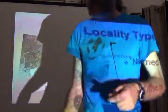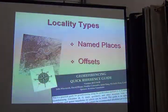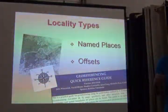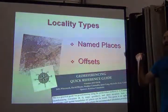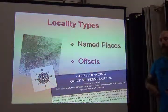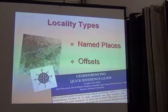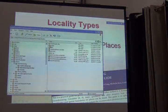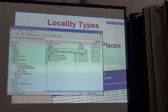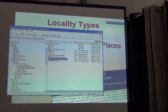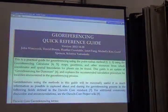One of the big reasons I want to show this is where you can find it. This document that I have printed for you is also available online and in the folders that came from the pen drives. To find the digital copy on the pen drives, it's inside the geo-referencing calculator folder, and it's called the geo-referencing quick reference guide.